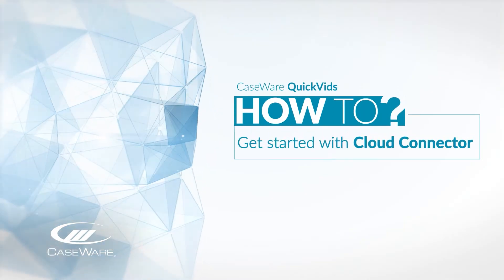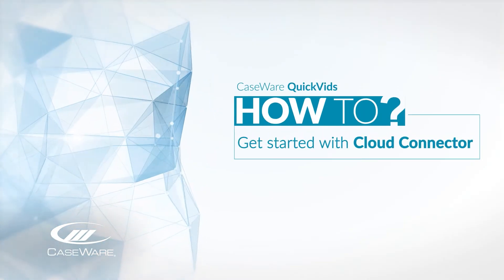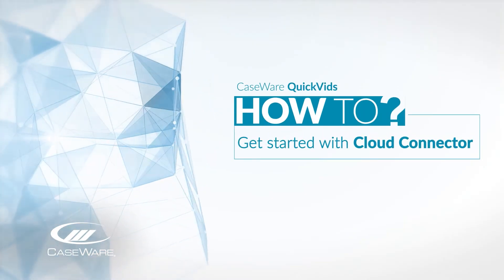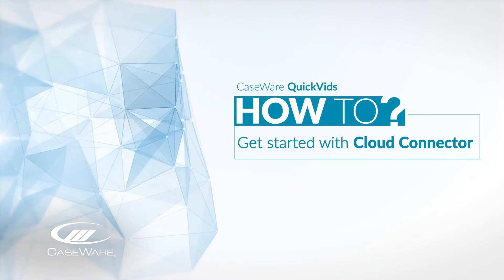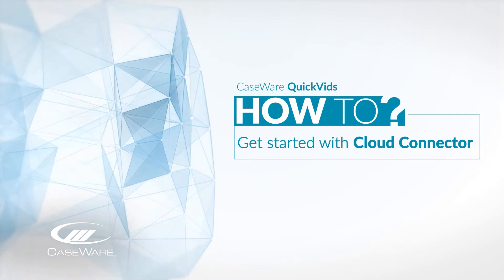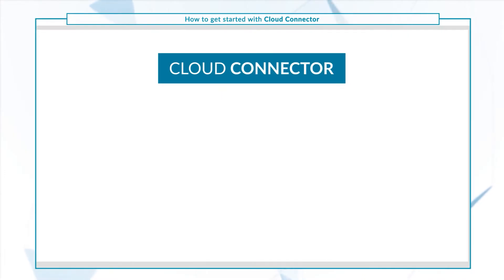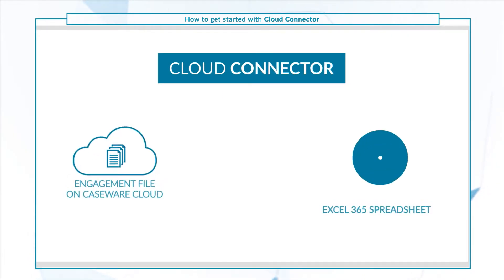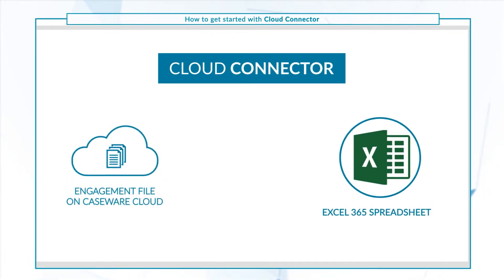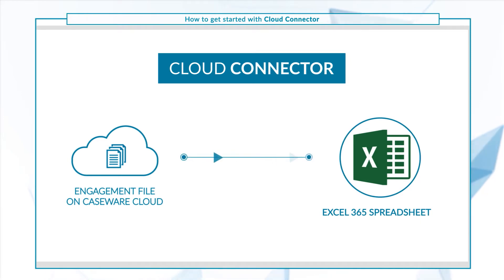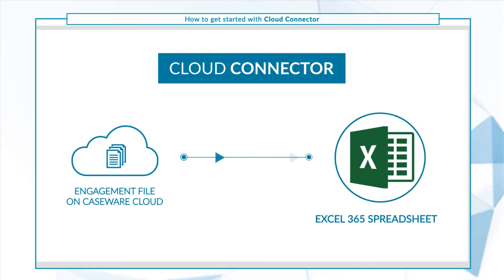Welcome! In this quick video we'll show you how to get started with Cloud Connector, our cloud-based add-in for Microsoft Office 365. Cloud Connector enables you to link engagement data such as the trial balance and entity information in real time from your engagement file on Casework Cloud to an Excel spreadsheet.